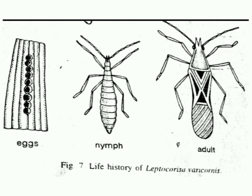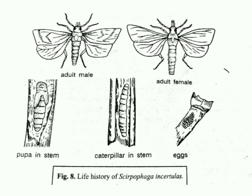This is the picture of the life history of Leptocorisa varicornis — please take a screenshot. This is also the life history of Scirpophaga incertulas — please take a screenshot of this picture as well.